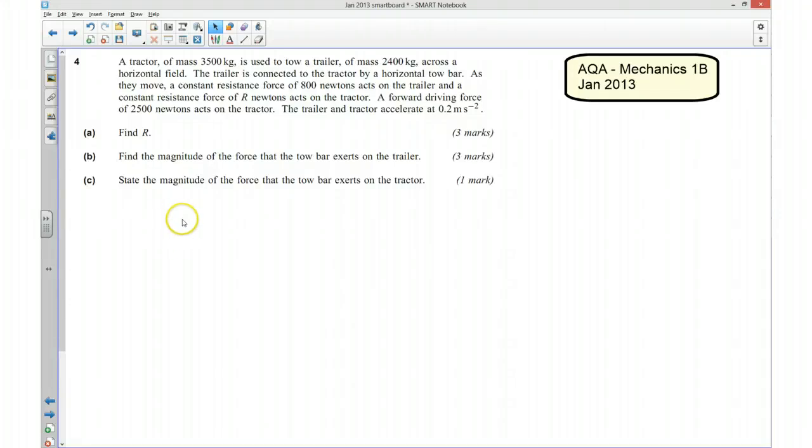Hi, this is from the AQA Mechanics 1B January 2013 exam. In this question, we're going to be looking at connected particles. We've got a tractor of mass 3,500 kilograms, and it's been used to tow a trailer of mass 2,400 kilograms across a horizontal field.